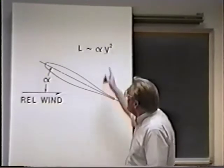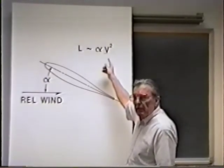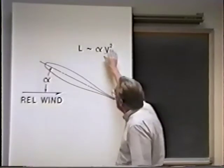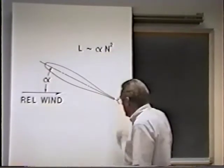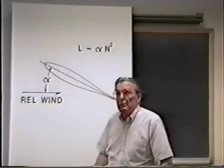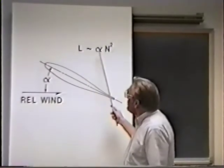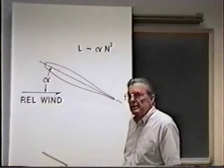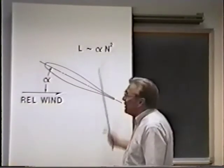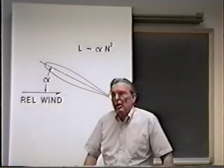Instead of the lift being related to the forward flight speed of the aircraft, in the case of the helicopter the lift is related to the RPM of the rotor. And the lift being produced by that rotor is proportional to the angle of attack of those rotor blades multiplied times the square of that RPM.